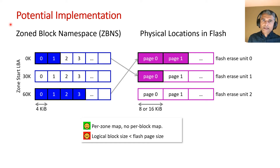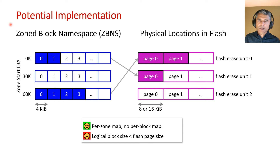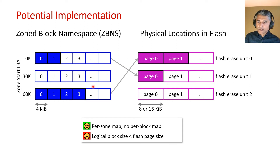One might think that rocks would add a lot of overhead in the SSD, but as far as I can see the overhead would be small. Let's consider how an SSD might implement a zoned block namespace: it can map a zone to one or more flash erase units, and this requires only a small per-zone map, not a large per-block map.